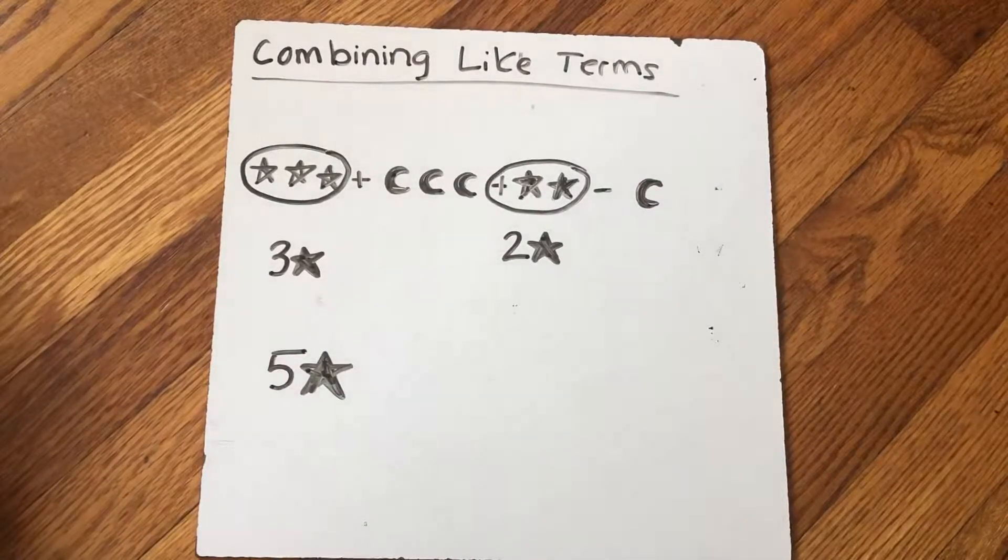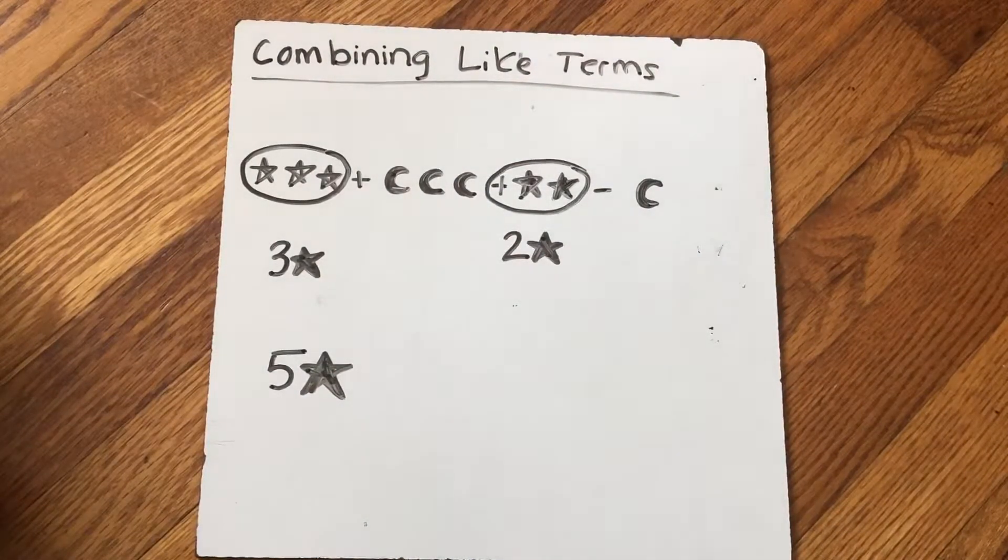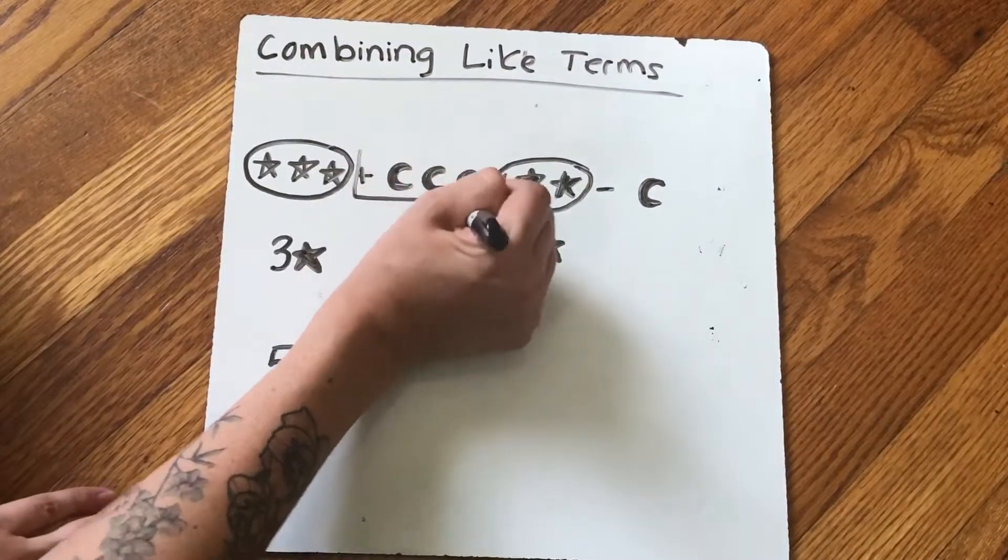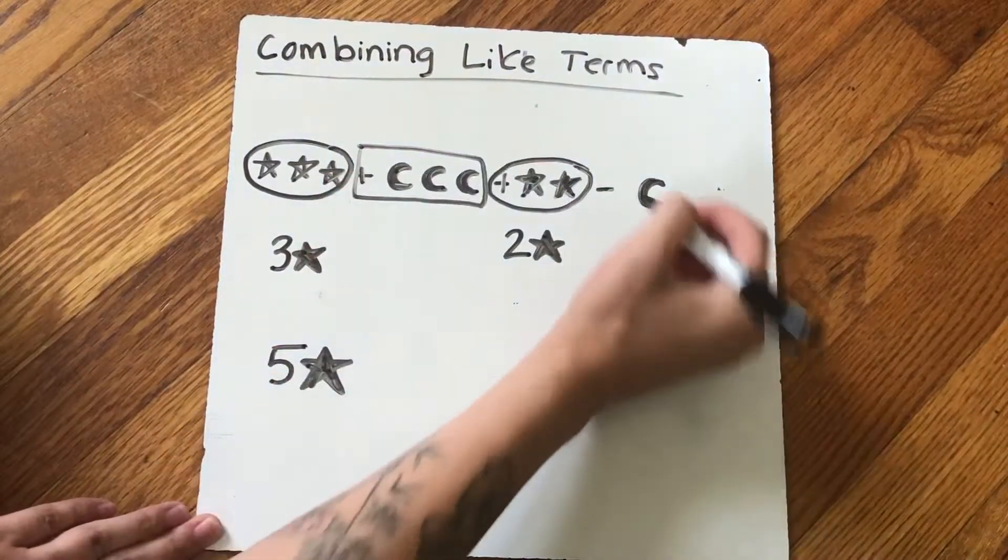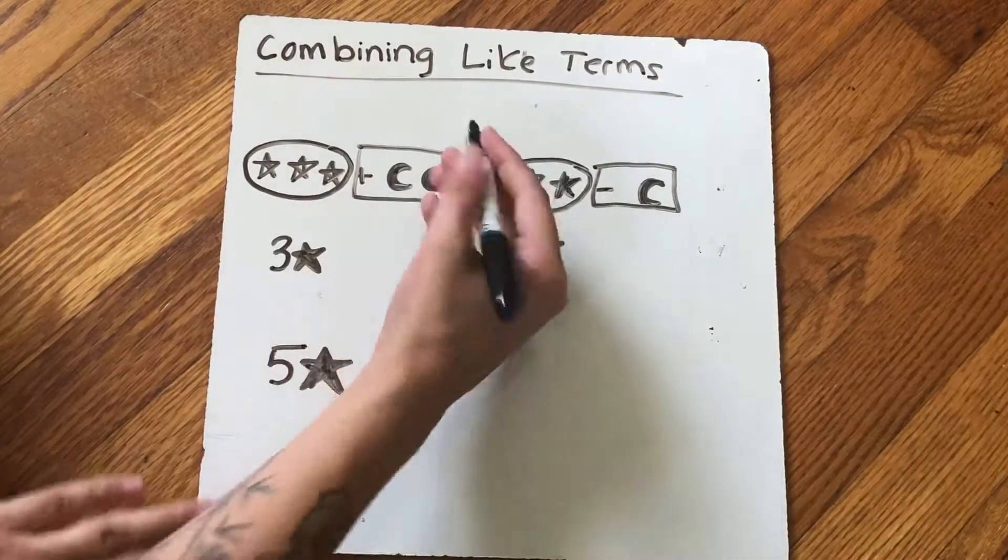Now let's look at my moons. When I am labeling or annotating my problem, I'm going to do a different thing. I circled it here. Now I'm going to box it just so I can make sure I know the difference between them.